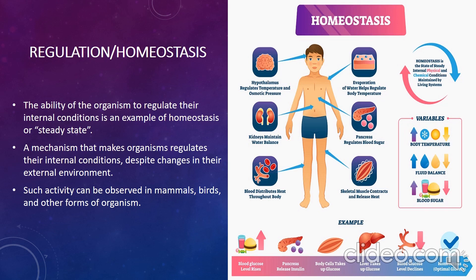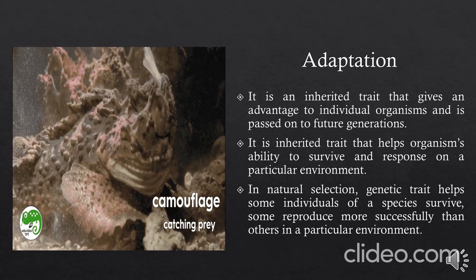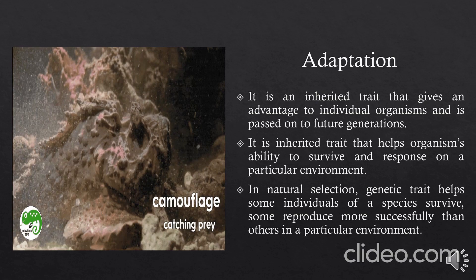Such regulatory activity can be observed in mammals, birds, and other organisms. Adaptation is an inherited trait that gives an advantage to organisms and is passed on to future generations. It is an inherited trait that helps organisms survive and reproduce in their environment. In natural selection, genetic traits help some individuals of a species to survive and reproduce more successfully than others in a particular environment.